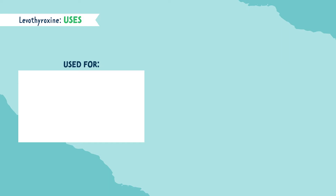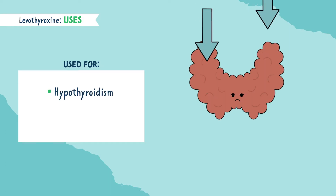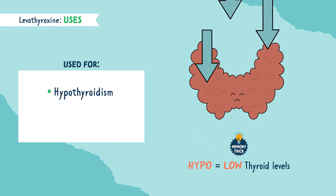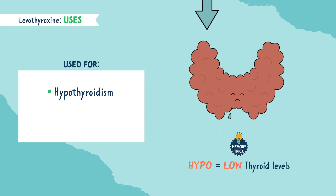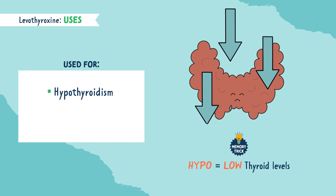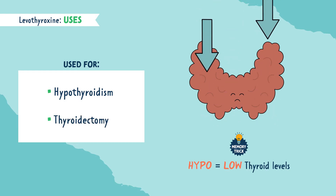Levothyroxine is used for patients with hypothyroidism, aka those that don't have enough thyroid hormone. Hypo — think low thyroid hormones.